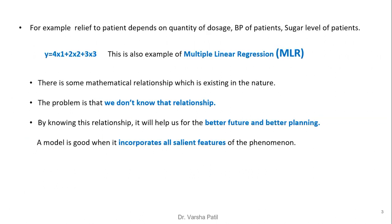For example, relief to a patient depends on quantity of dosage, BP of the patient, and sugar level of the patient. That equation can be represented as y = 4x₁ + 2x₂ + 3x₃. Again, the problem is to find out the value of these parameters. This is also an example of multiple linear regression, as more than one independent variable is present.